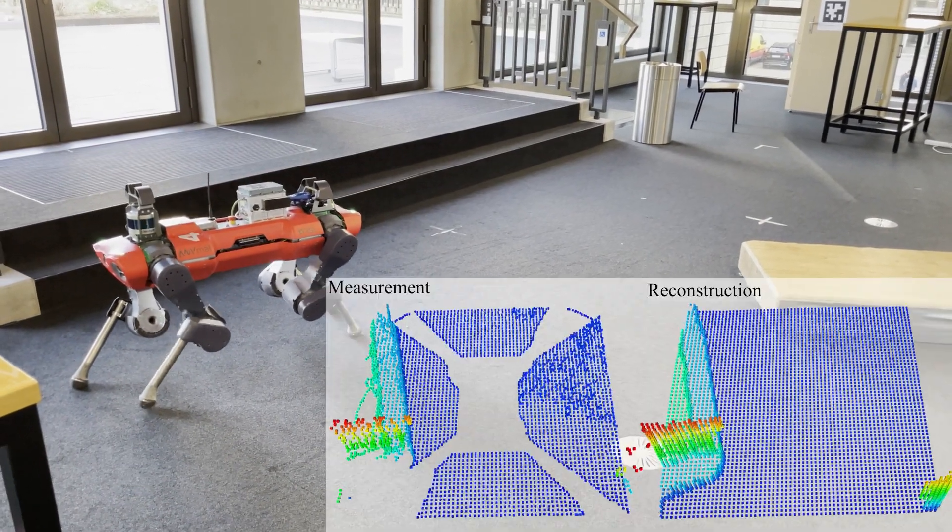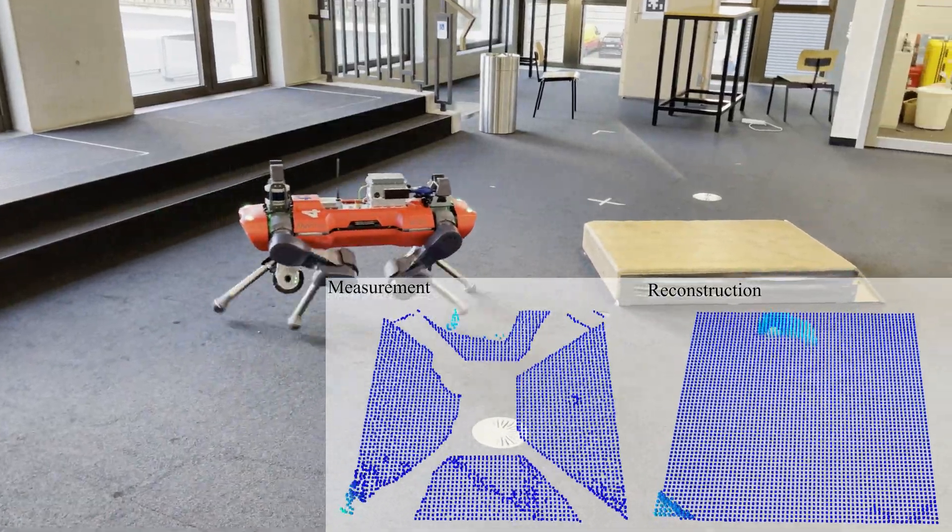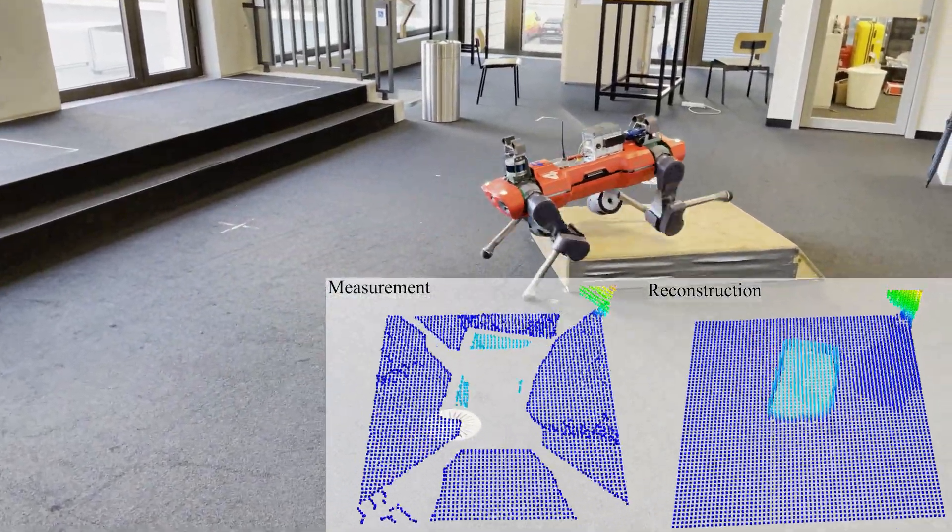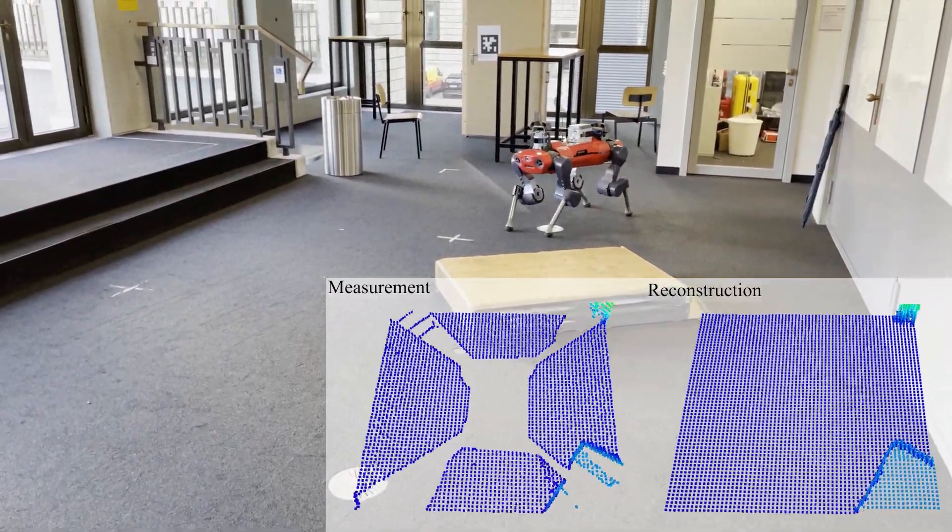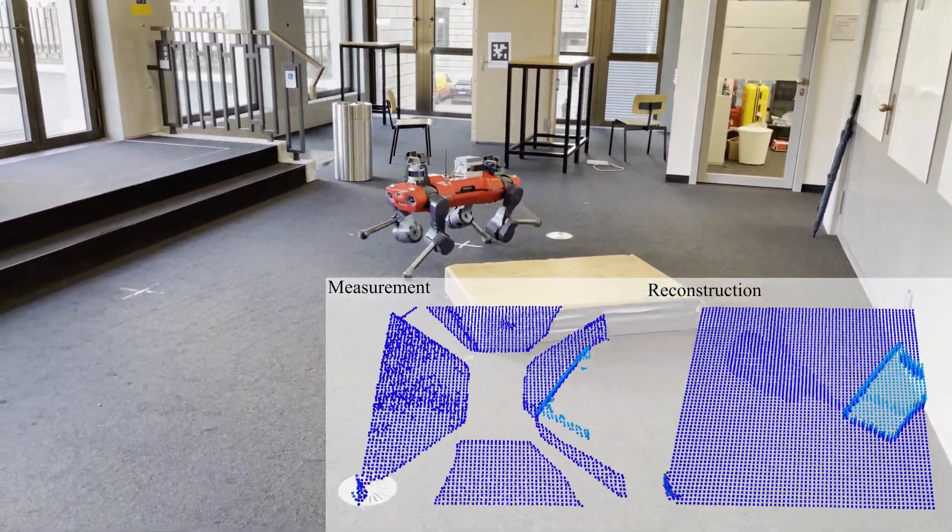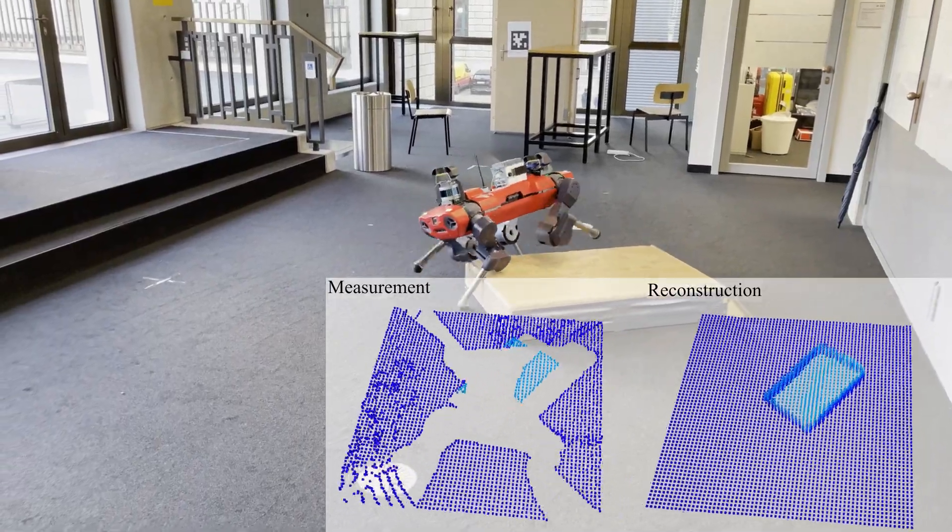We validate the approach in simulation and on the real robots in different scenarios. The pipeline is able to run at around 6 Hz on the onboard Jetson Xavier. The reconstruction is then passed to the policy which uses the height information to overcome the challenging terrain.